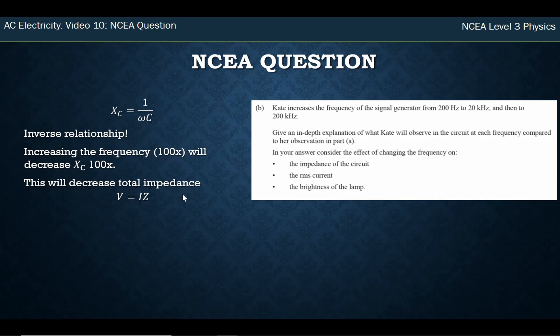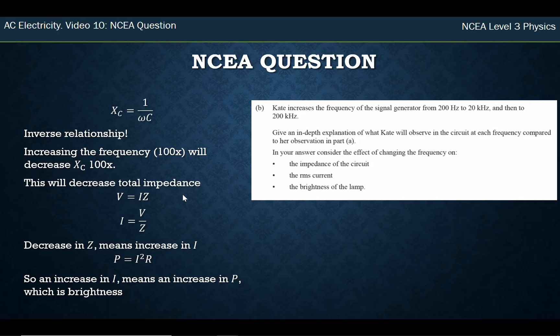This is now a level 2 problem: V = IZ. Rearranging, I = V/Z — they are in an inverse relationship. So if I decrease my impedance, I increase the current. There's more current in the circuit, and when there's more current we get a brighter bulb. You show that using P = I²R — that's one of the power formulas from level 2. Increasing I means increasing power, therefore increasing brightness. So at 20,000 Hz, there's an increase in brightness.